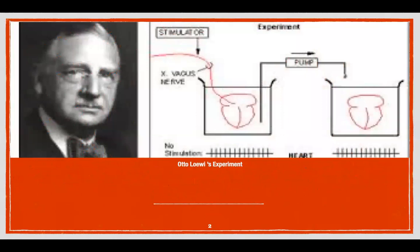The story of Neural Control of Heart Rate is the story of the German scientist Otto Loewi. Loewi had a dream on the night of Easter Sunday in 1920 about an experiment. He woke up the next day and tried to perform the experiment but he forgot. The next night he had the same dream and woke up at 3am and jotted down notes.